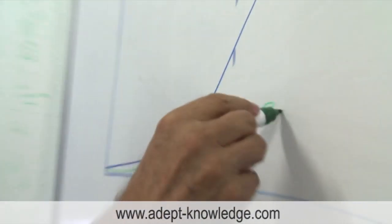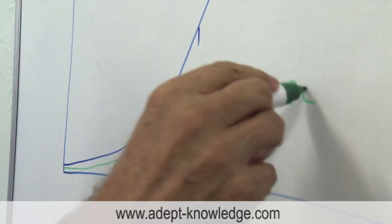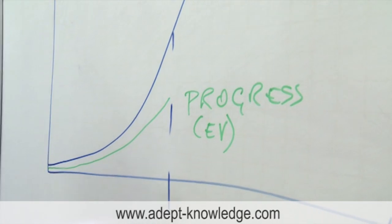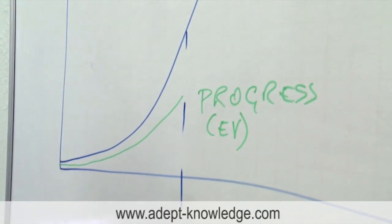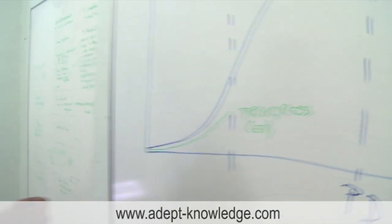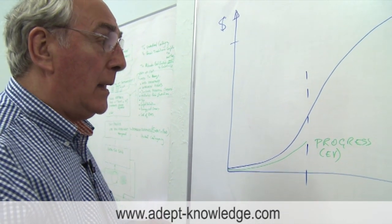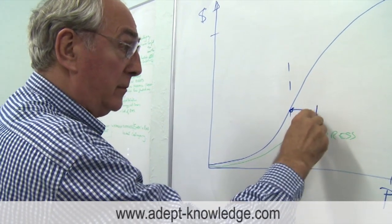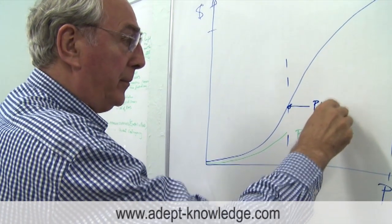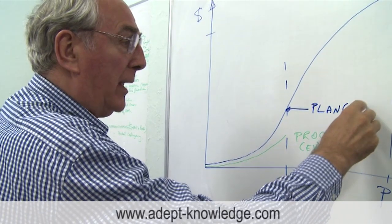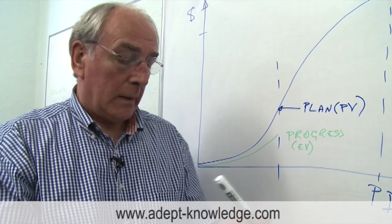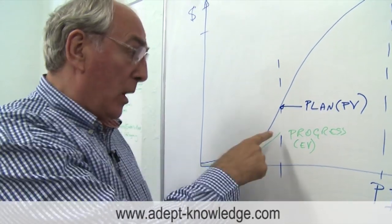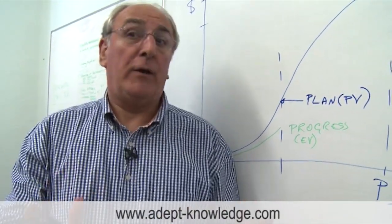That progress is technically called the earned value. But that's the physical progress on the job but measured in budget terms. Pretty important but a vital thing to do. We compare that with this point here on our baseline which is, if you like, our plan. That's sometimes called the planned value. I'm just putting PV there. So we immediately know this is where we are in relation to where we plan to be. That's pretty vital.